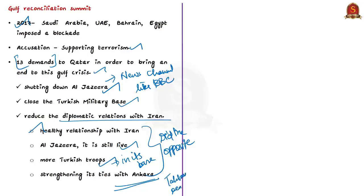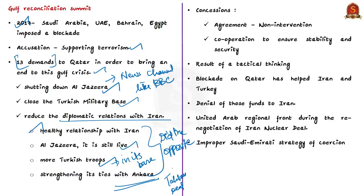However, in spite of all this, Qatar made few concessions in order to reach a reconciliation. It told them it cannot agree to all 13 demands, but agreed on non-intervention in the internal affairs of other countries and cooperation amongst them to ensure stability and security at a regional level. Following the summit, Qatar clearly stated it is not willing to alter its relation with Iran and Turkey. So Saudi Arabia took the initiative of stepping down from its earlier demands and made peace with Qatar. However, the action of Saudi Arabia is presumed to be the result of tactical thinking, because the rift within Gulf countries and the blockade on Qatar only helped Iran and Turkey.